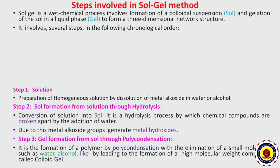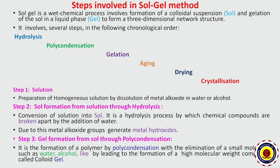The different steps involved in the sol-gel method are given in the following chronological order: hydrolysis, polycondensation, gelation, aging, drying, and crystallization.